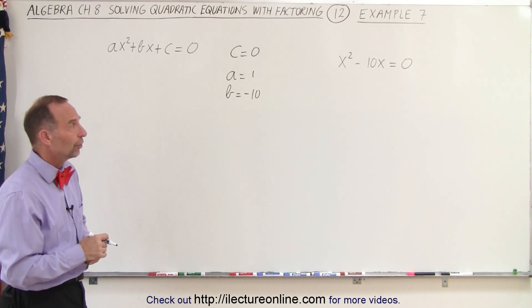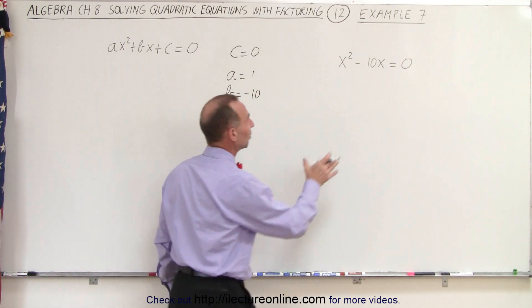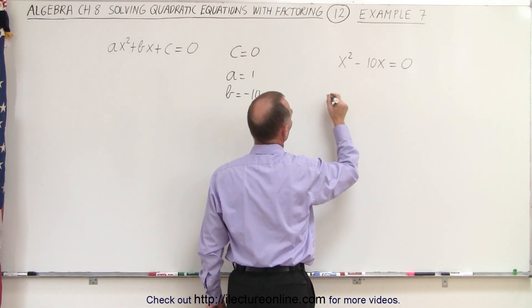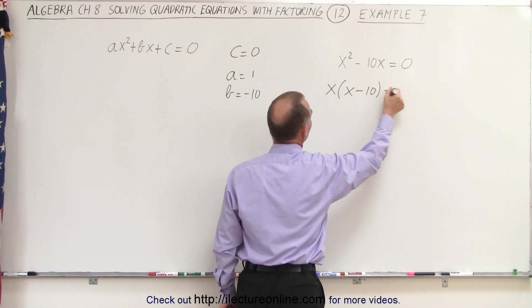Now if C is equal to zero, typically you can factor out a common factor. In this case a common factor is X, so we can write this as X times X minus 10 is equal to zero.